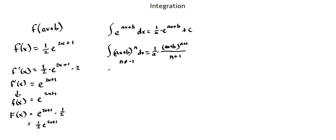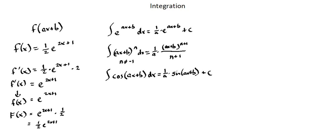Let's look at trig functions. Thinking about the integral of cosine and the process of integrating cosine, we have sine of (ax+b) multiplied by the inverse of the coefficient of x, 1/a, with our integrating constant c. The integral of cos(ax+b) with respect to x equals 1/a times sin(ax+b) plus c.